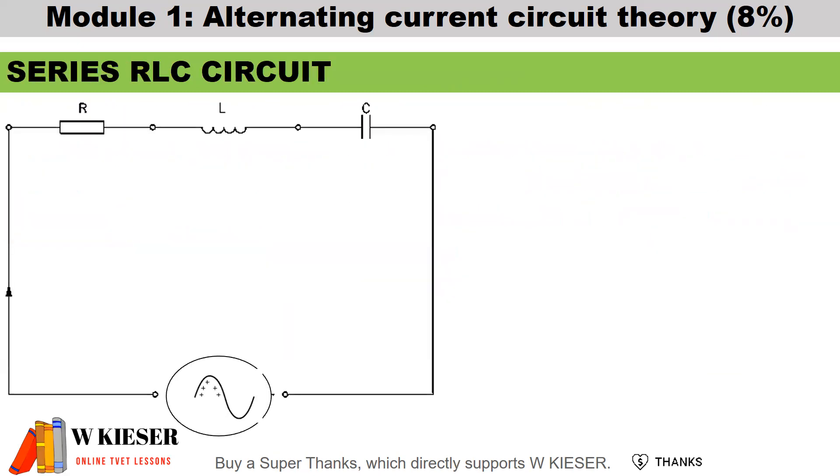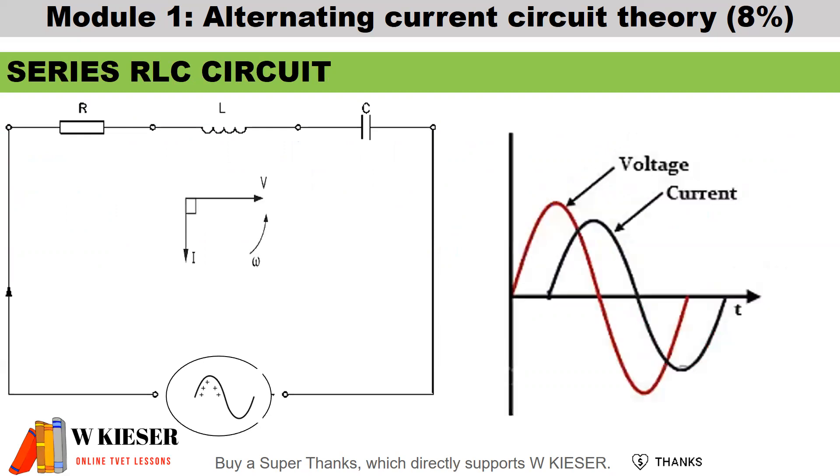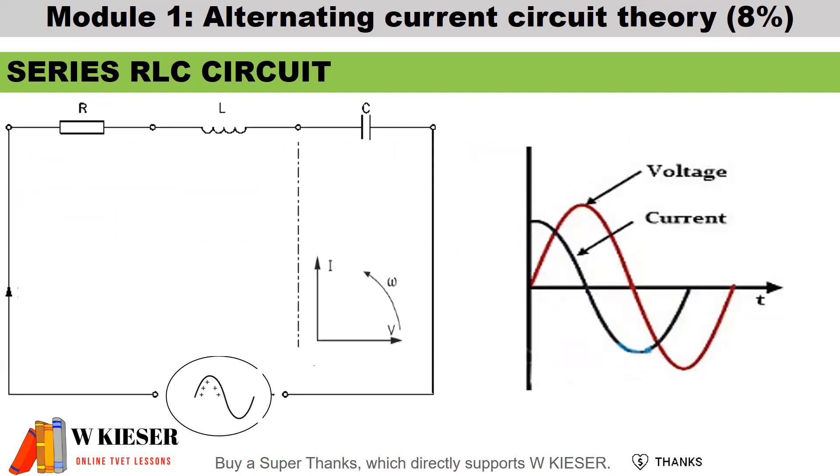Here we have a basic RLC series circuit. When we have a circuit that is purely resistive, we find that voltage and current are in phase with each other. If a circuit is mainly inductive, it implies that current is lagging voltage by a certain angle. If a circuit is mainly capacitive, it implies that current is leading voltage by a certain angle. And this would all depend on the power factor.